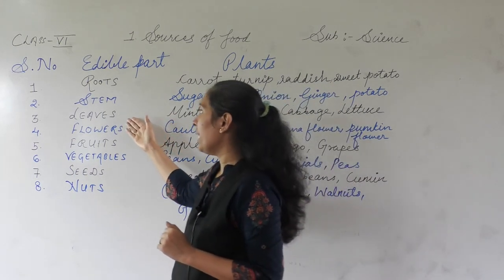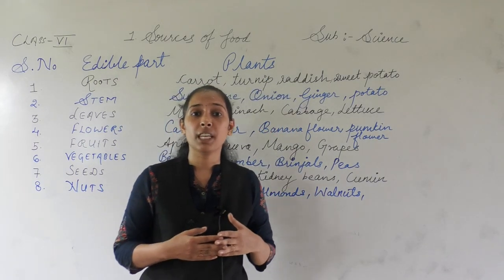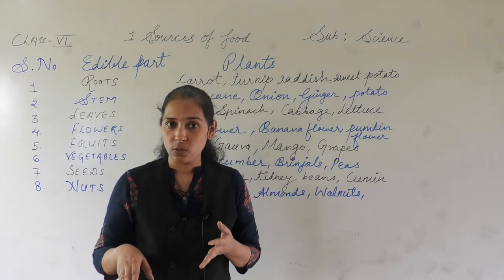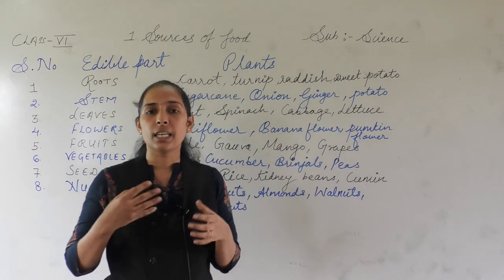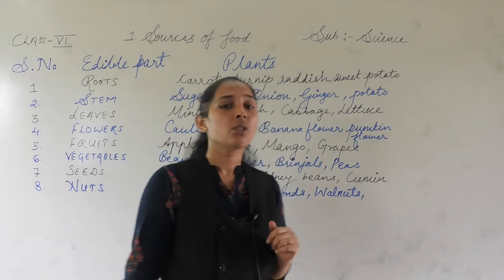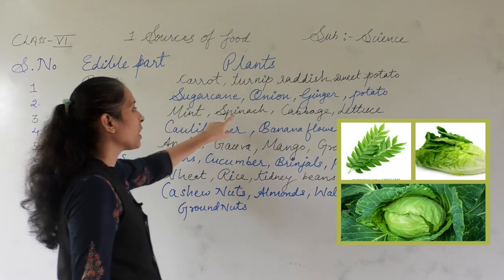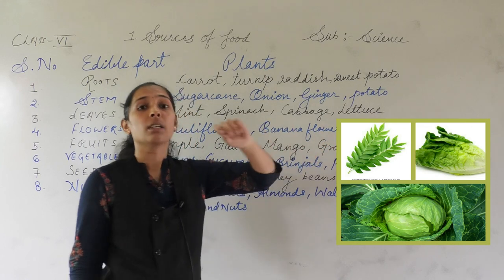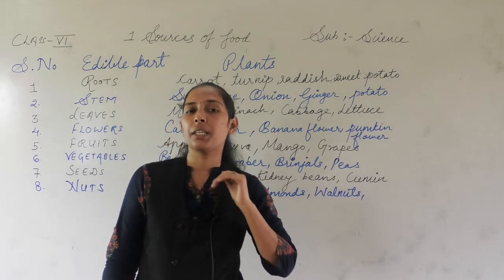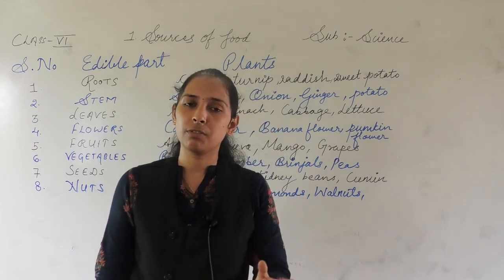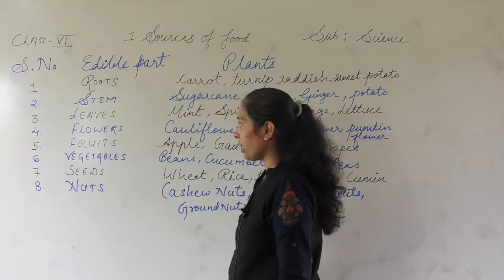The next edible part is leaves. There are so many leaves we add in our food while cooking. We use curry leaves, coriander, and we can also eat cabbage. The edible leaves are mint, spinach, cabbage, curry leaves, and coriander. Whatever leafy vegetables you are eating, all those leafy vegetables are nothing but edible leaves.